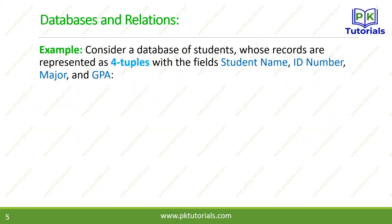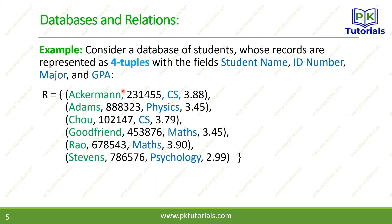Consider a database of students. A student's database is represented as four-tuples, so N is replaced by 4. The fields are: student name, ID number, major, and GPA. There are four fields in the four-tuple. This is an example of a relation.